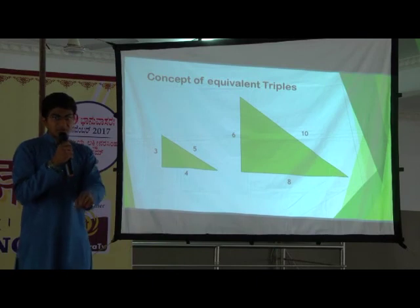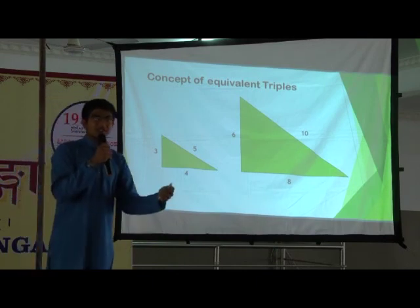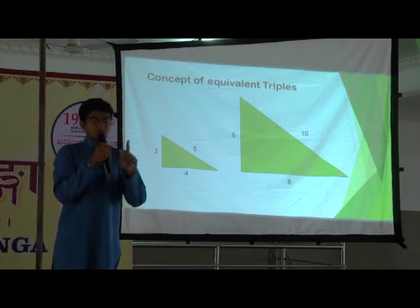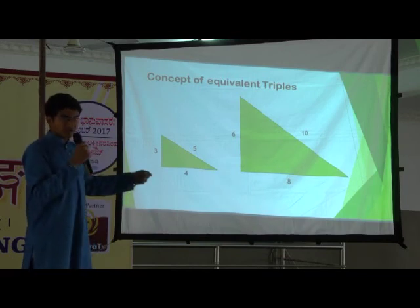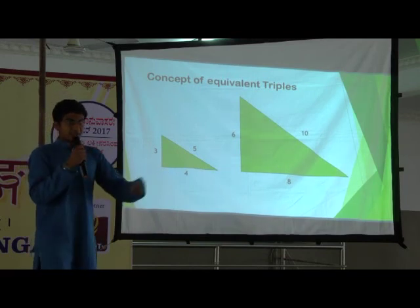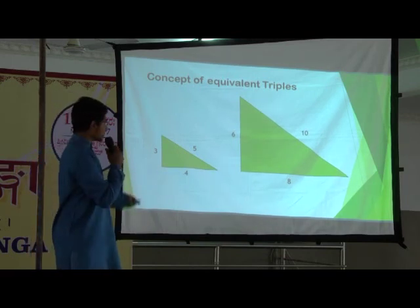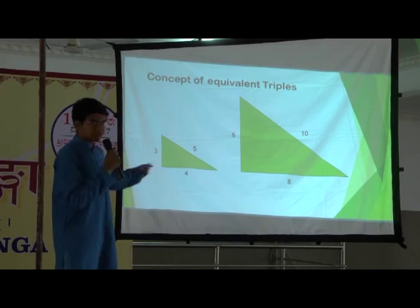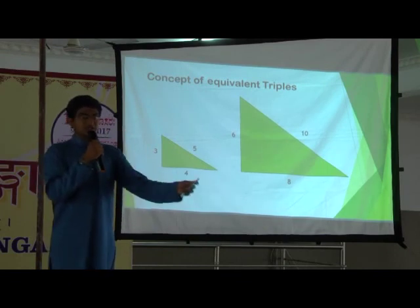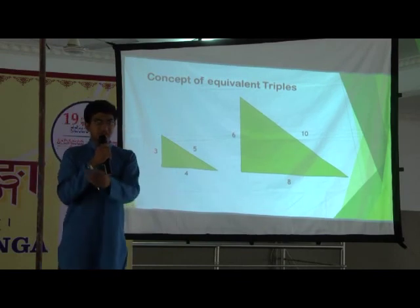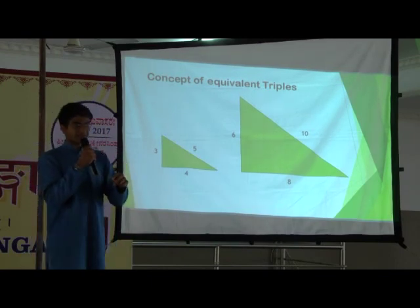Just like the simplest form of a fraction, every set of equivalent triples has one perfect triple. So 4, 3, 5; 8, 6, 10; 12, 9, 15 — all have the perfect triple 4, 3, 5. Similarly, 15, 8, 17; 30, 16, 34 — all have the perfect triple 15, 8, 17.